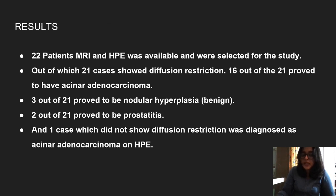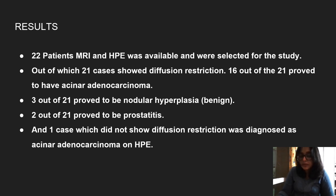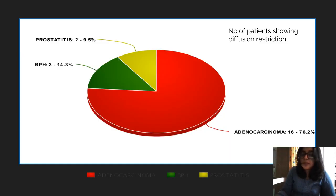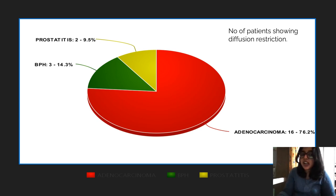Coming to the results, 22 patients with MRI and histopathology available were selected for the study. Out of these, 21 cases showed diffusion restriction. Of the 21, 16 proved to have acinar adenocarcinoma, 3 had benign nodular hyperplasia, and 2 turned out to be prostatitis. One case which did not show diffusion restriction was diagnosed as adenocarcinoma on histopathology. As shown in the pie chart, adenocarcinoma accounted for 76.2%, BPH for 14.3%, and prostatitis for the remainder.